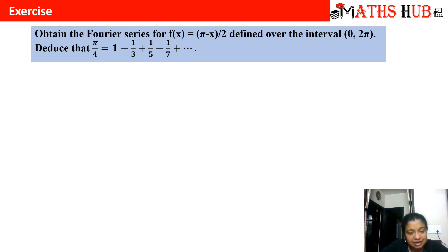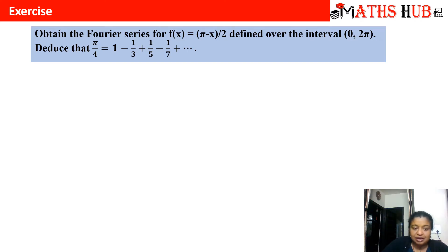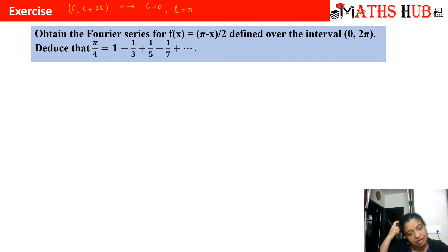Deduction means that from the Fourier series expansion we have to obtain certain values. The first job is to create the Fourier series expansion for f(x) = (π - x)/2. The general interval is c to c + 2l. Comparing with 0 to 2π, c = 0 and l = π. Now we substitute these values into the Fourier coefficients.